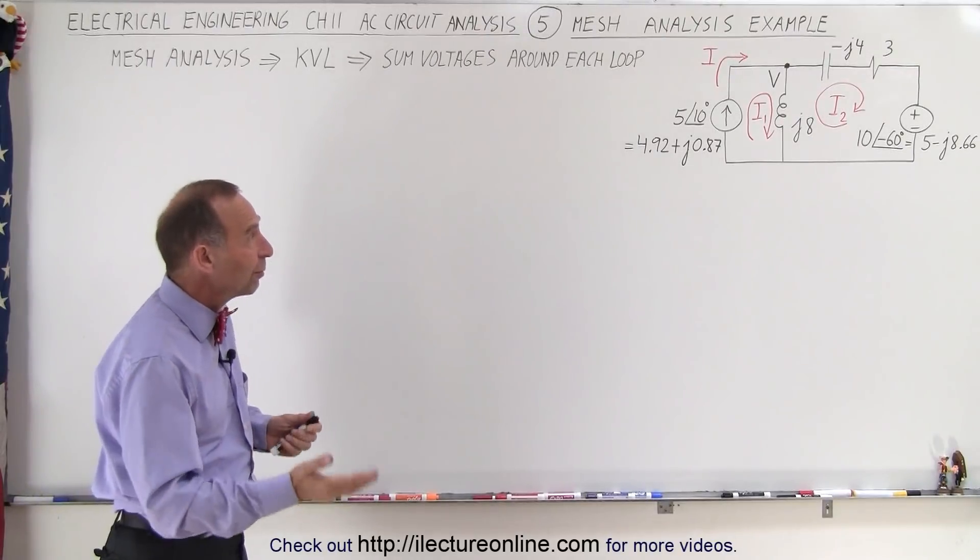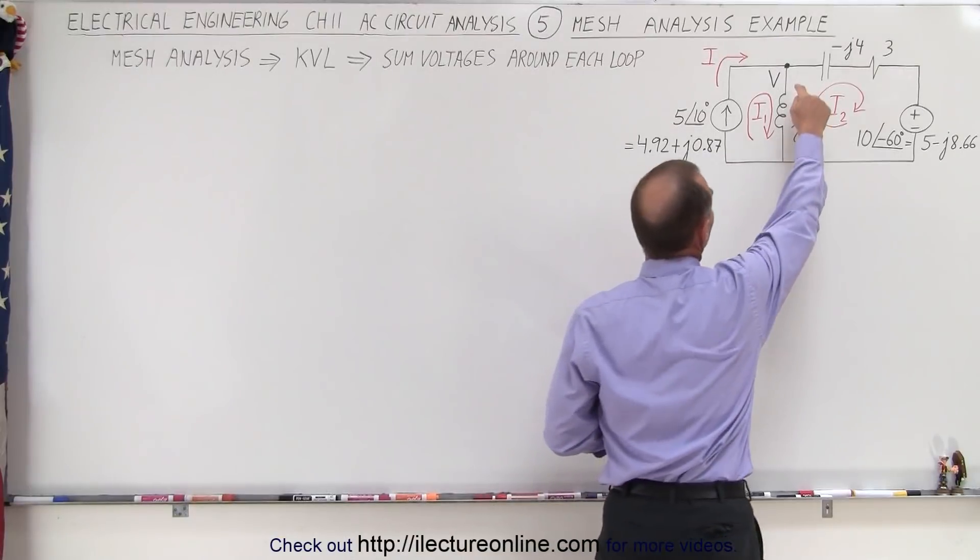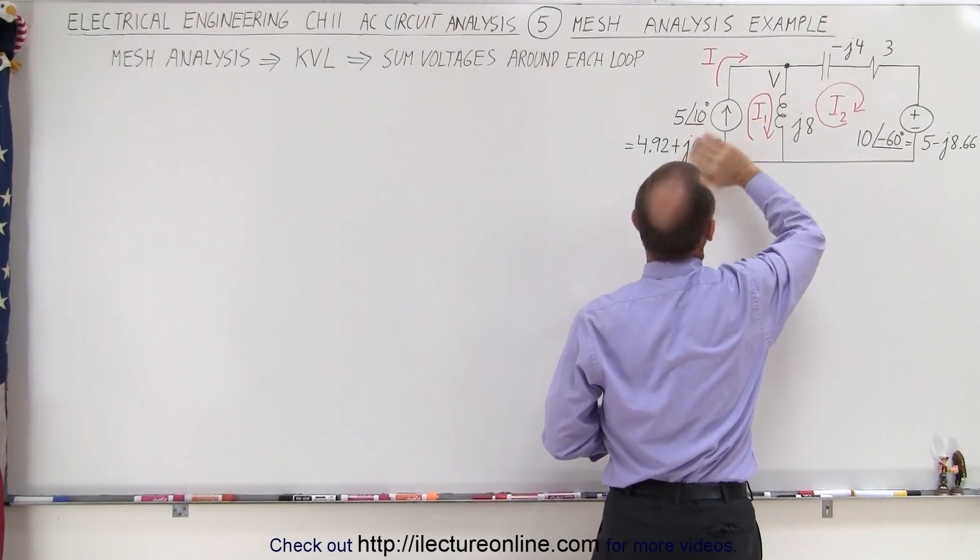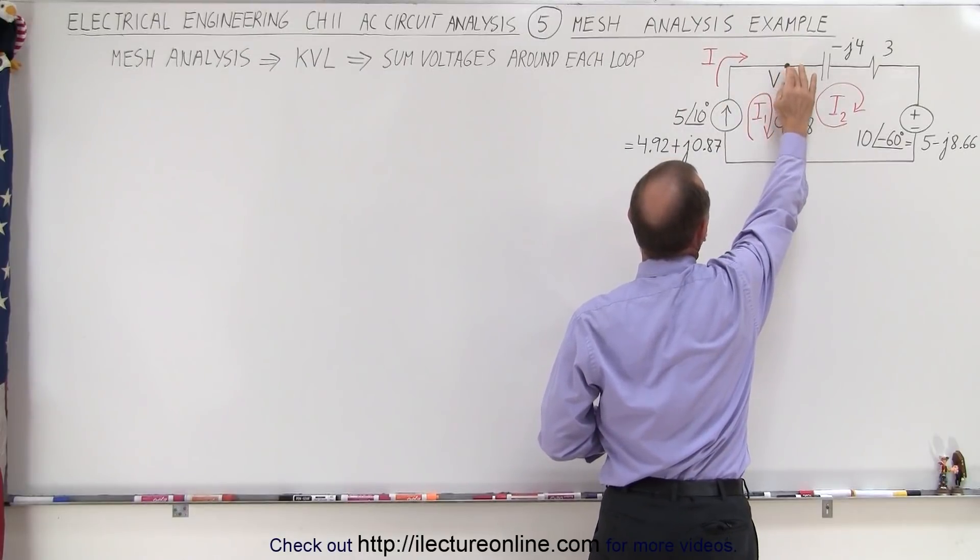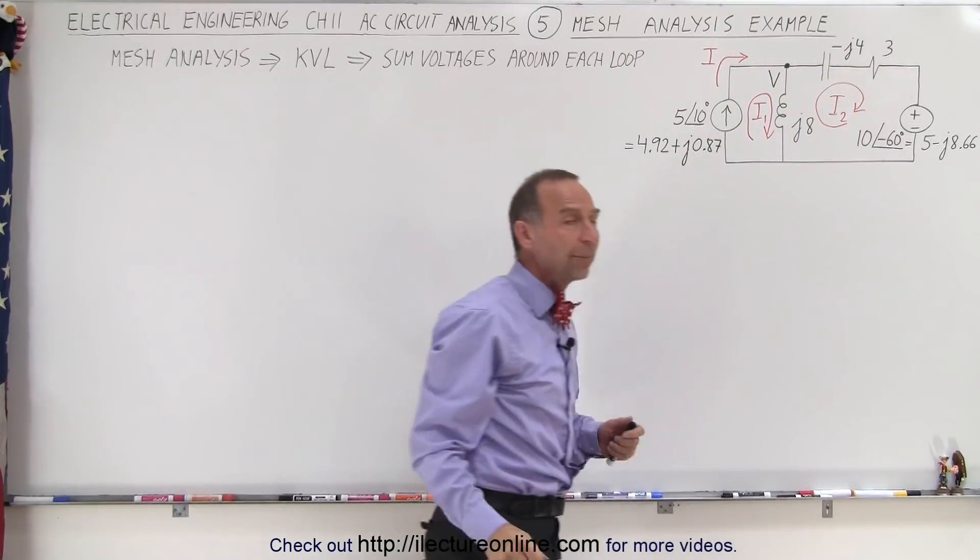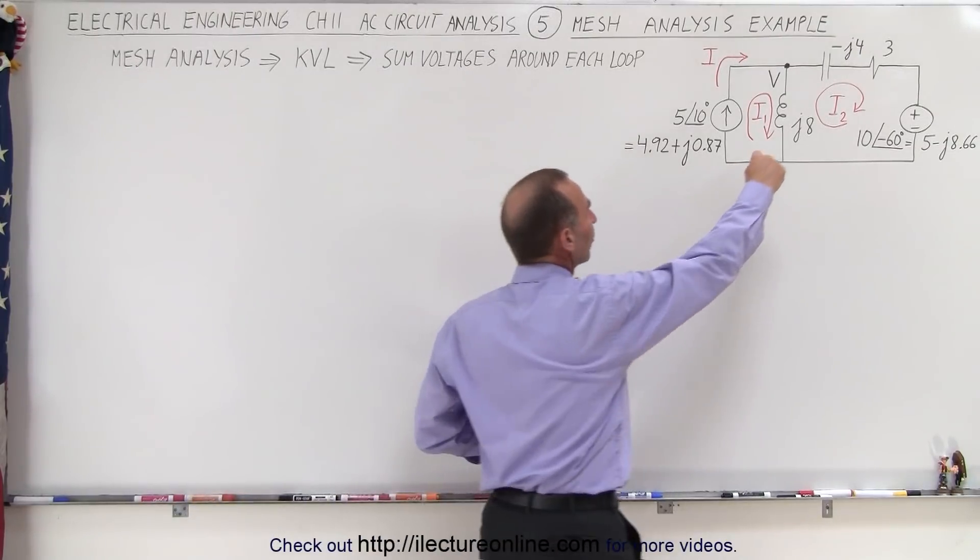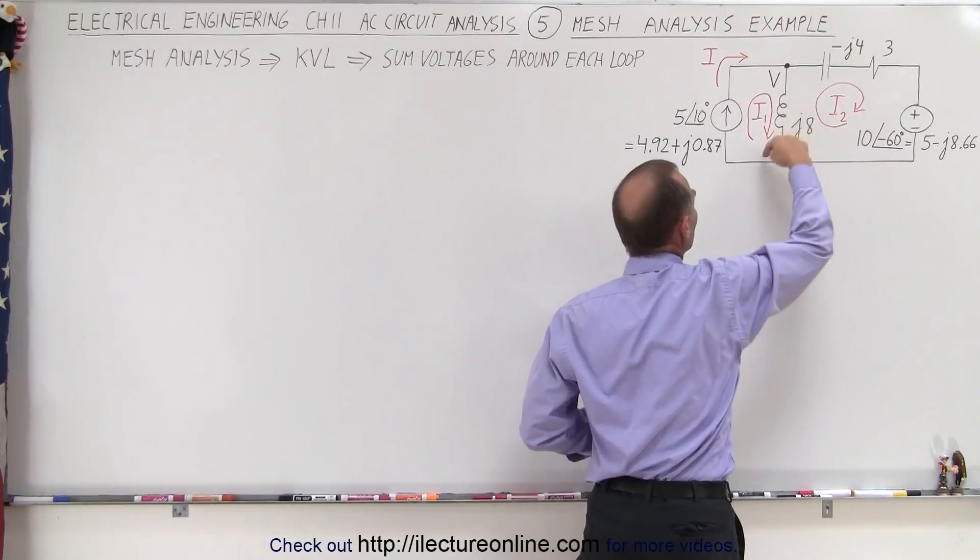The difference is in the previous video with nodal analysis we tried to find the voltage drops across each of these branches so we can say that the current going into the branch point equals the two currents leaving the branch point. What we're doing here instead with mesh analysis, we're going to add up the voltages going around each mesh.